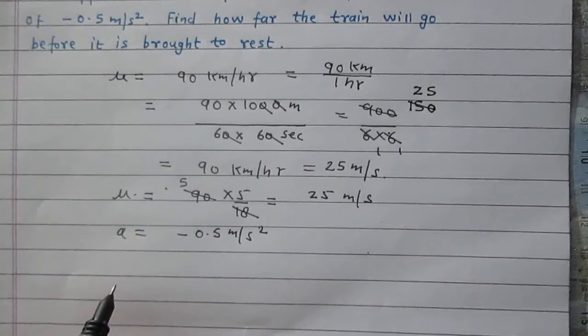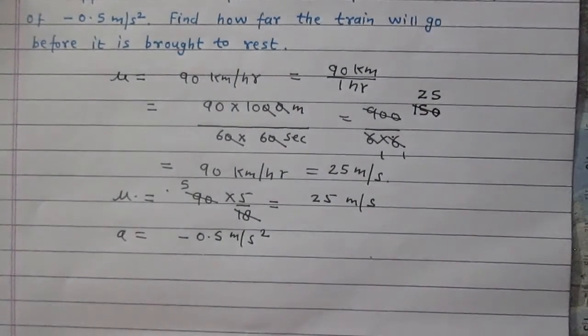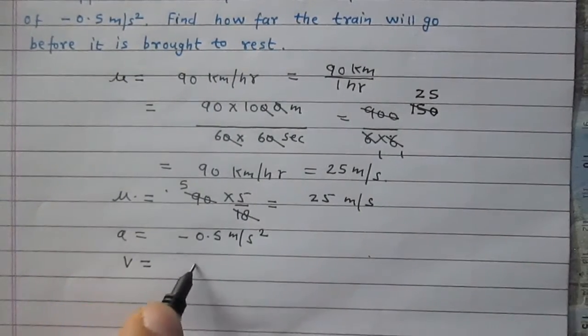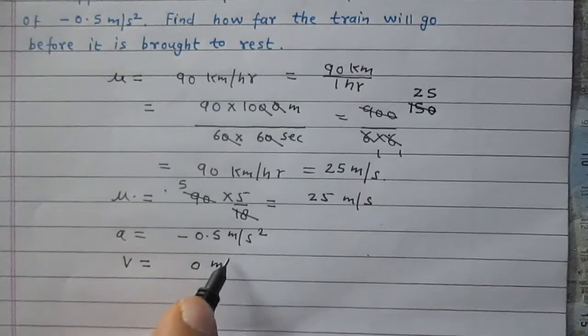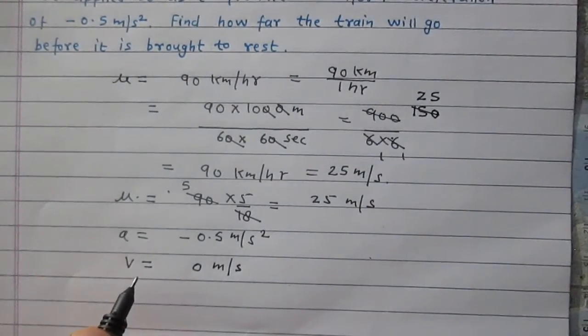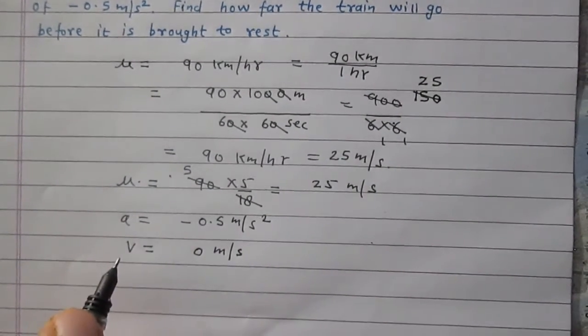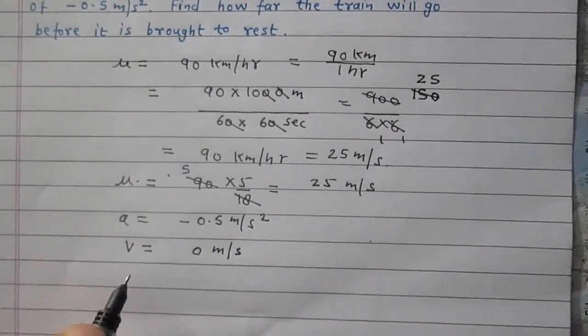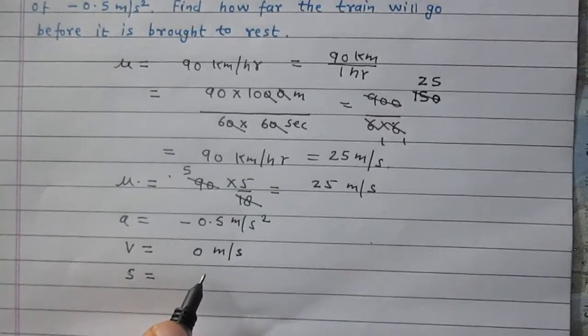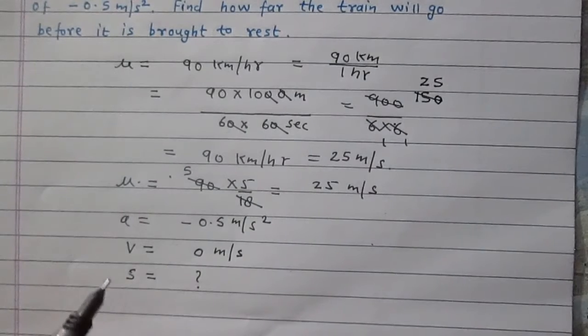We are given that body is brought to rest. Brought to rest means velocity of the body is 0. So final velocity of the body is 0 meter per second. And we are asked how far the train will go, so we are to find the displacement traveled by the train before the train stopped.